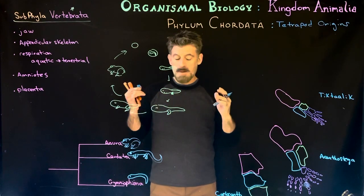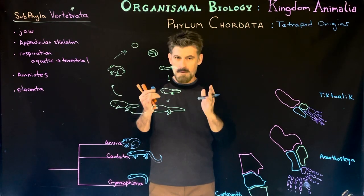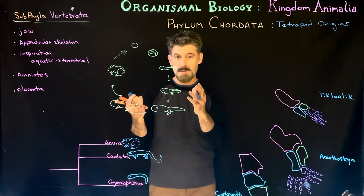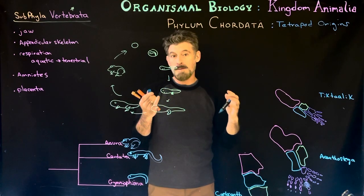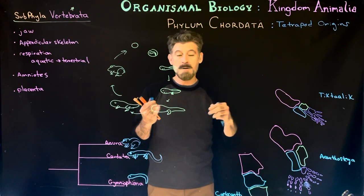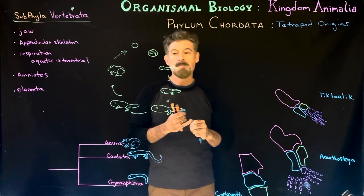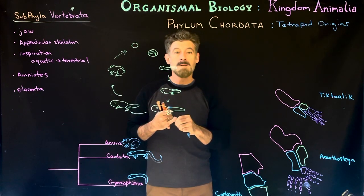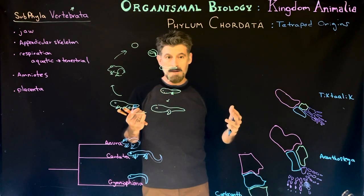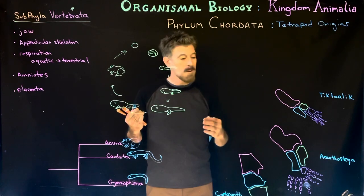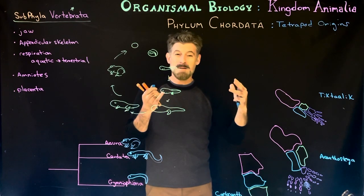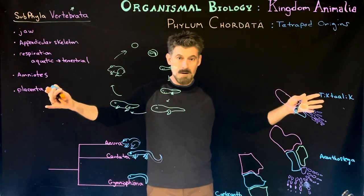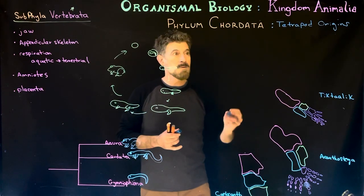We're going to look at the beginning of tetrapod origins. For the vertebrates, we had the development of all the chordate characteristics first, then a cranium. Most of them have vertebrae — that's where the name comes from. We looked at jaw evolution and bone development, got into jawless fish and then fish generally. Now we're taking the next step: some of those fish start to develop fins, and those fins will start to develop into our limbs. Our arms and legs are going to be homologous to those structures.